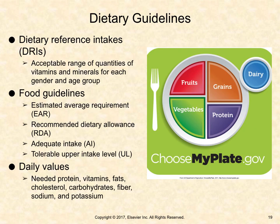The Dietary Reference Index provides the acceptable ranges of vitamins and minerals for each gender and age group. There are four components: estimated average requirement, recommended dietary allowance, adequate intake, and tolerable upper intake level. The Food and Drug Administration, FDA, created daily values for food labels in response to the 1990 Nutrition Labeling and Education Act.